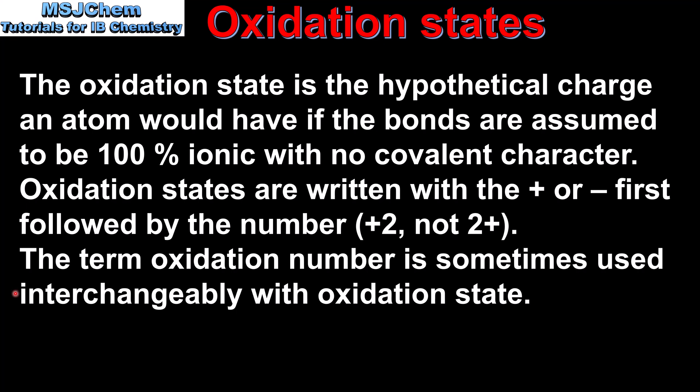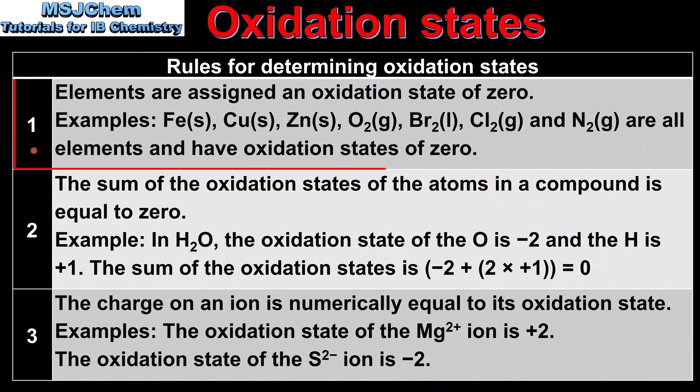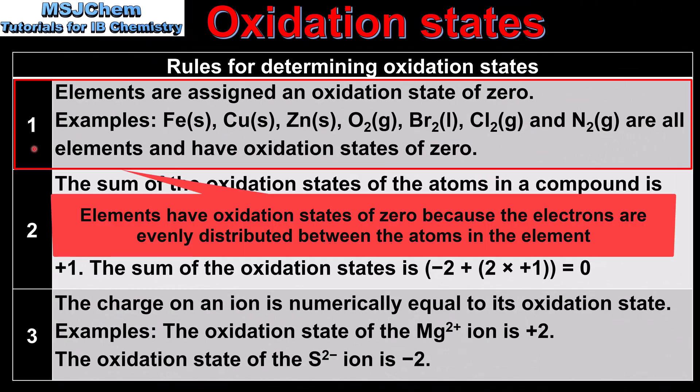Next we'll look at the rules for how to determine oxidation states. Rule 1 concerns elements: elements are assigned an oxidation state of 0. Examples include Fe, Cu, Zn, O2, Br2, Cl2, and N2 — all of these, because they're elements, have oxidation states of 0.